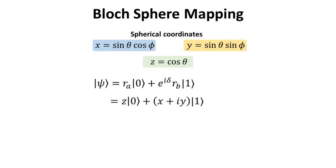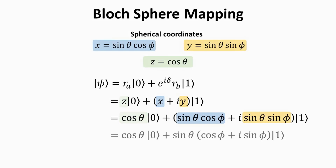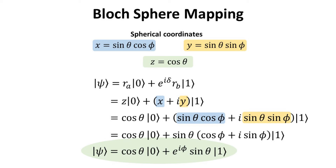Recall that we rewrote the complex amplitudes in rectangular form as shown. We replace the X, Y, and Z variables by their corresponding forms in spherical coordinates, and with some simple simplification and the use of Euler's identity, we finally arrive at a form like the Bloch sphere representation. However, we are not quite there yet.